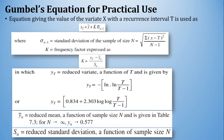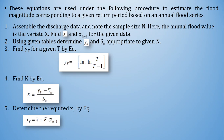To summarize: remember the formula x_T = x̄ + k·σ_(n−1). To find x_T — the maximum flood magnitude likely to occur at return period T — you need σ_(n−1), x̄, and k. Once all these parameters are found, you can easily determine the extreme flood value for a given return period T. These equations are used under the following procedure to estimate flood magnitude corresponding to a given return period based on annual flood series.